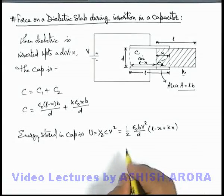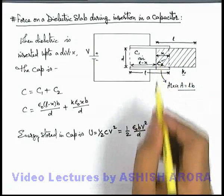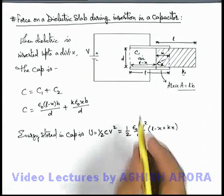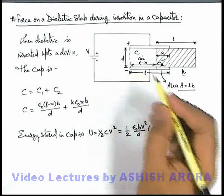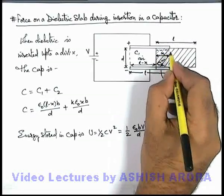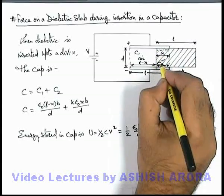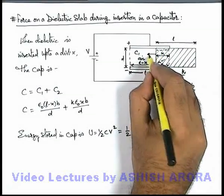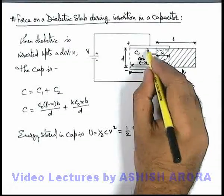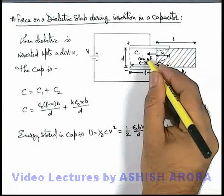Here we can see that energy depends on the position of the dielectric slab as it is inserted. Overall potential energy is changing. And here we can see if this plate is positively charged, this is negatively charged, there will be some bound charges appear on the dielectric slab which are opposite to the plates. And due to opposite charges, the plate will experience an inward force into the region between the plates of the capacitor, due to which the slab will have a tendency to move automatically inside.